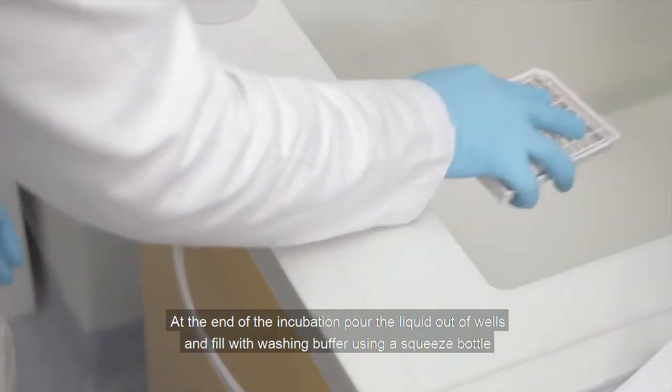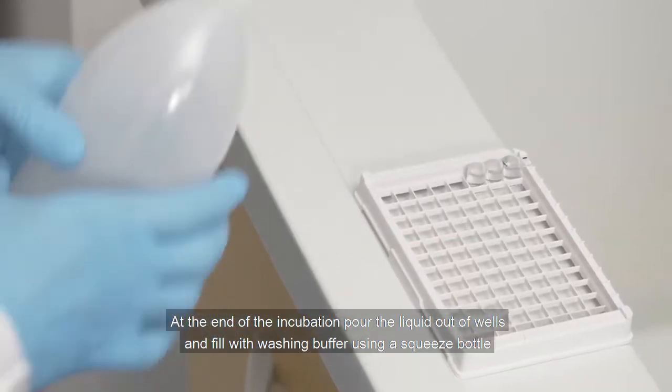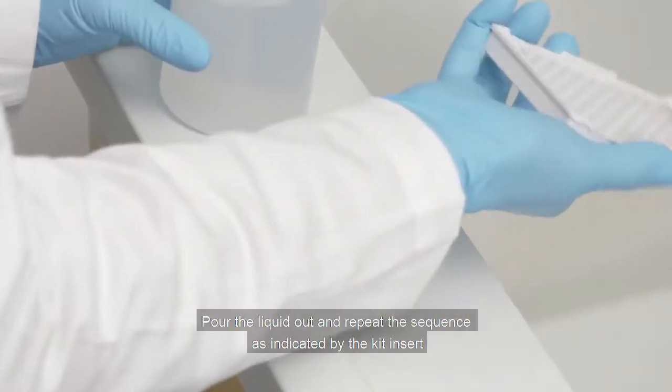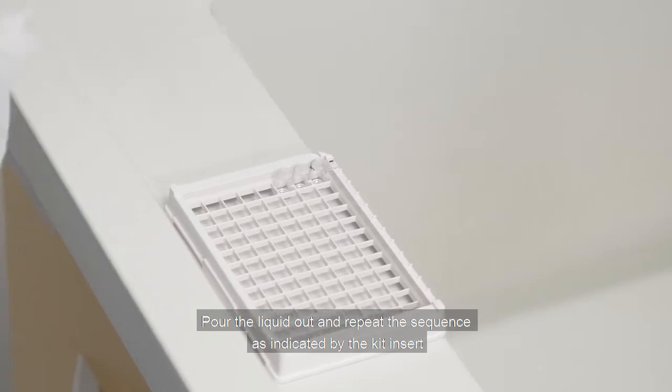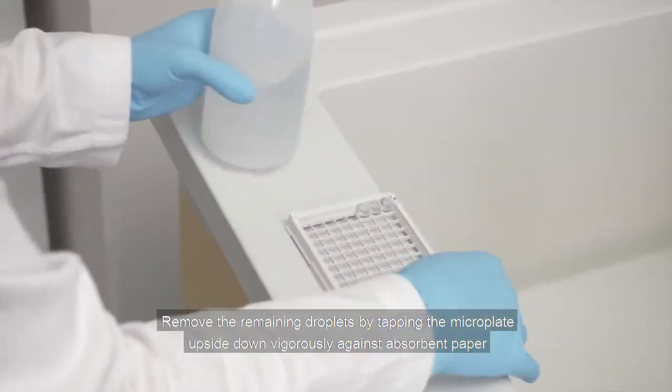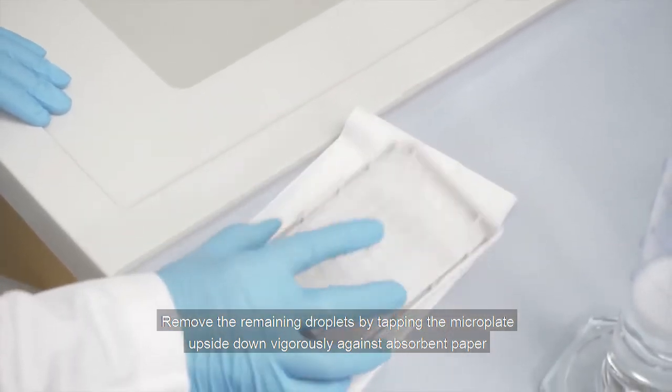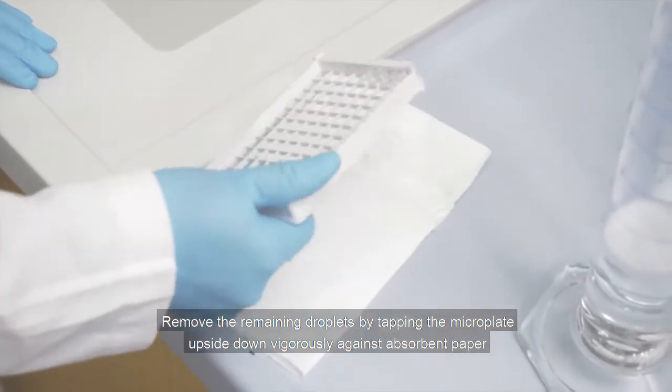At the end of the incubation, pour the liquid out of wells and fill with washing buffer using a squeeze bottle. Pour the liquid out and repeat the sequence as indicated by the kit insert. Remove the remaining droplets by tapping the microplate upside down vigorously against absorbent paper.